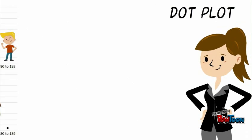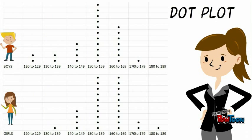Similar to the double column graph, the dot plot uses a horizontal line to represent the arm span and a vertical line to represent the tally of students. In this plot we can see that there is a spike of dots between 150cm and 169cm for the girls. When we look at the boys, we can see a spike only between 150cm and 159cm.